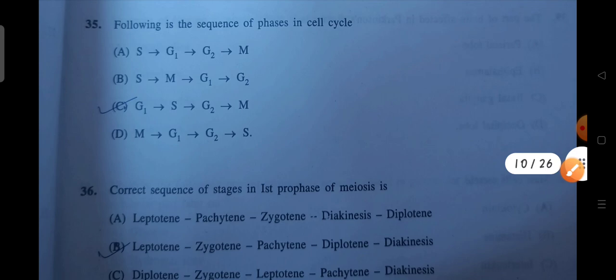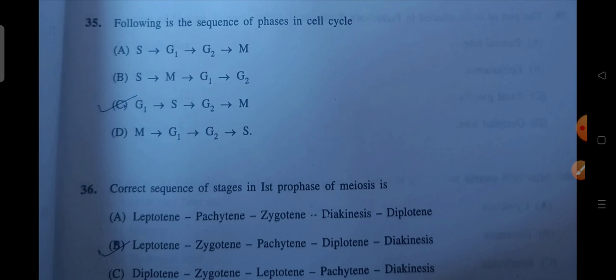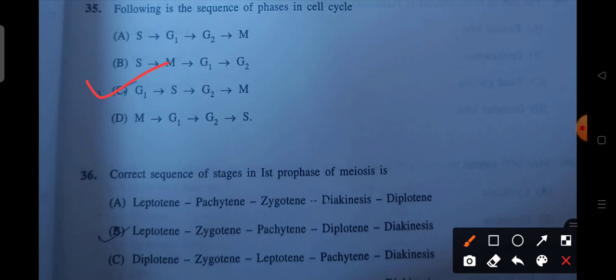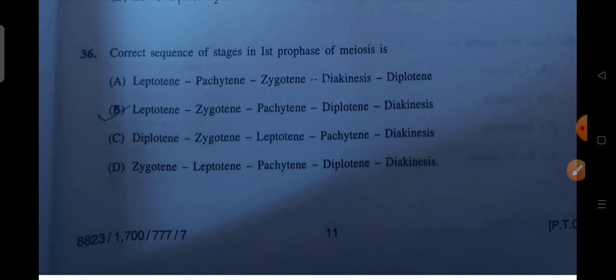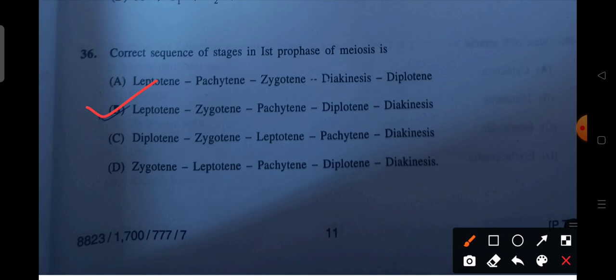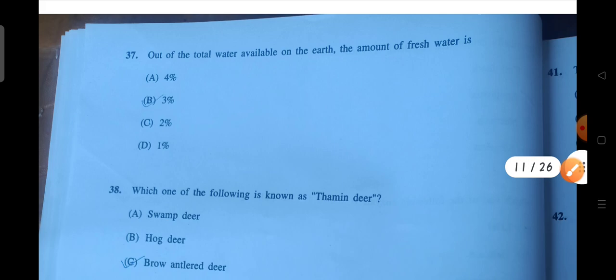Next is the sequence of phase in cell cycle. So which is the correct sequence? That is C. First you have G1 phase, then S, then G2, then M. Next is the correct sequence of the stages of first prophase of meiosis. So first is your leptotene, then zygotene, then pachytene, then diplotene, then diakinesis. So B will be the correct answer.